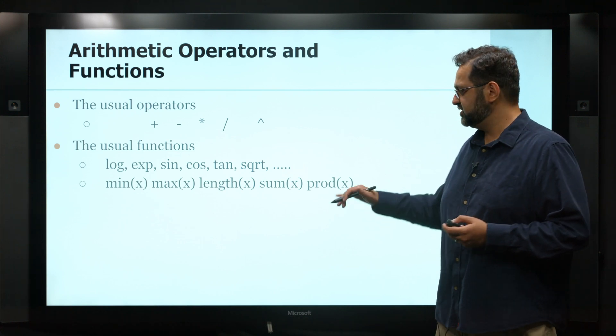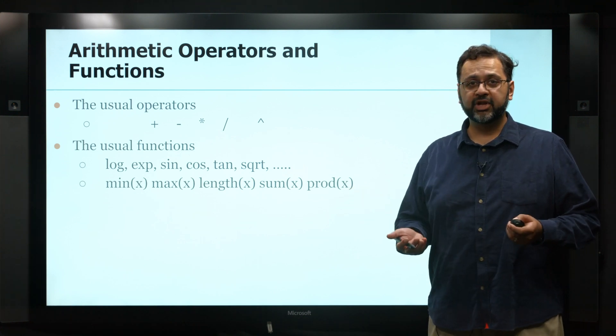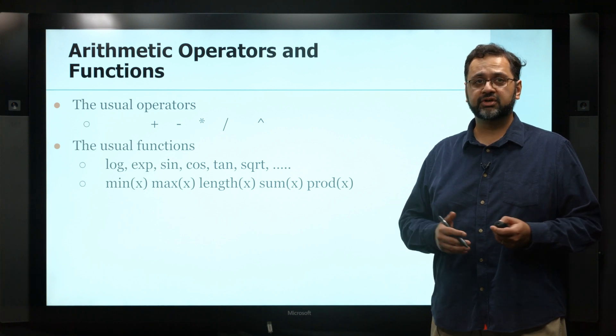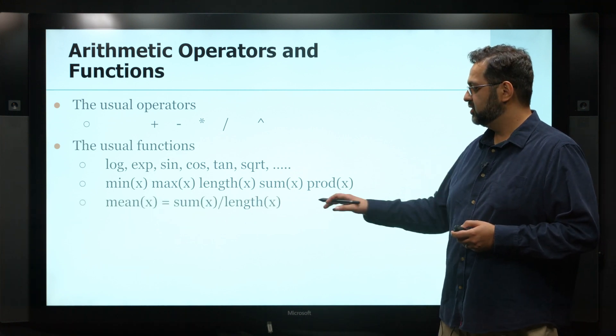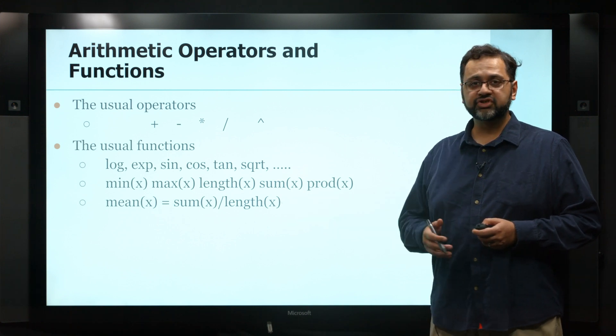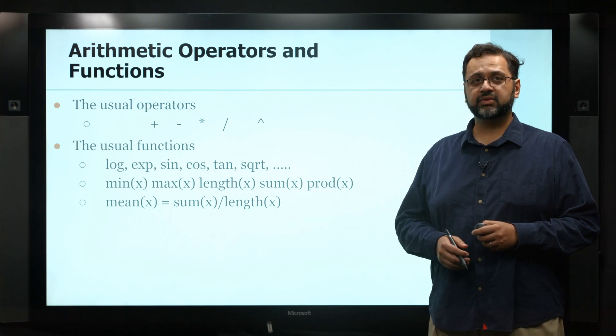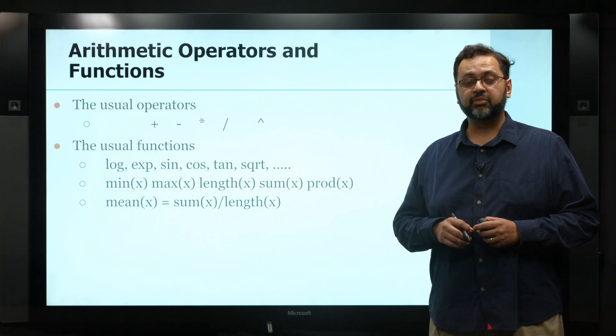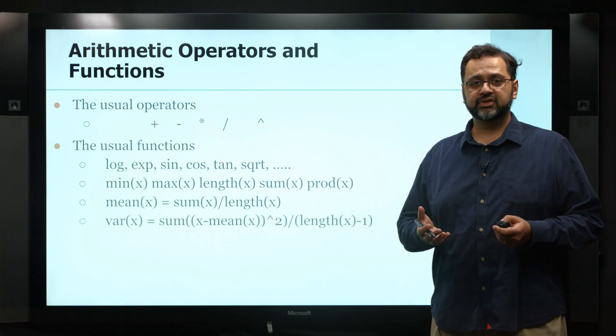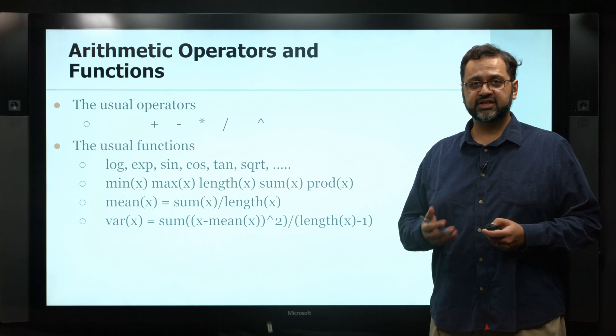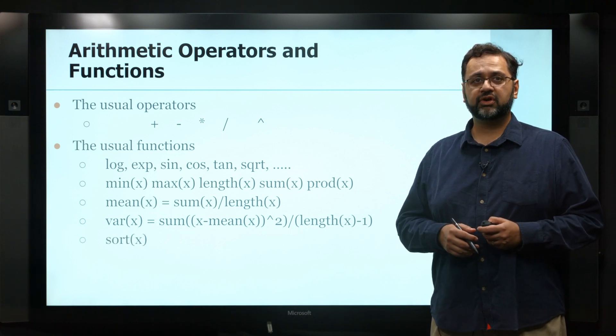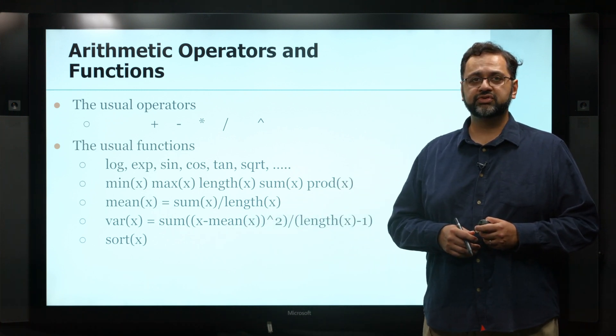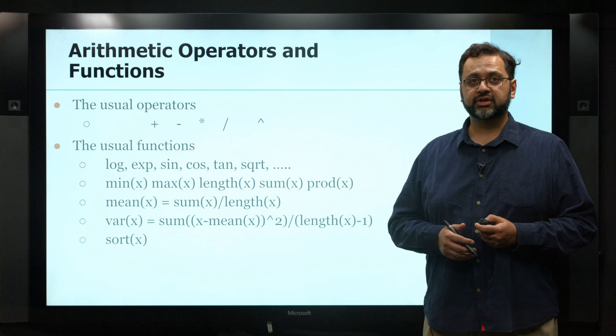But we also have statistical functions like minimum, maximum, the length, the sum, or even the product of everything in there. We can create new functions based on combining the other ones. Obviously there already is a function called mean which is doing that operation itself and also the variance and standard deviations and so forth. So all these are there, even the sort functions are there that can be used for numerical vectors.